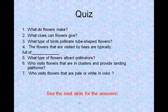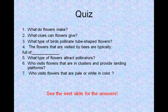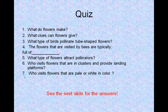Now let's take a little quiz. Number 1: What do flowers make? Number 2: What clues can flowers give? Number 3: What type of birds pollinate tube-shaped flowers? Number 4: The flowers that are visited by bees are typically full of... Number 5: What type of flowers attract pollinators? Number 6: Who visits flowers that are in clusters and provide landing platforms? Number 7: Who visits flowers that are pale or white in color?